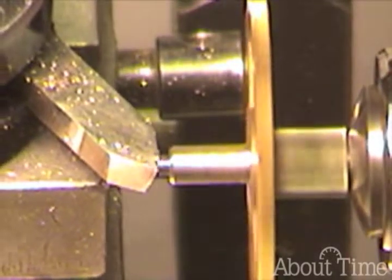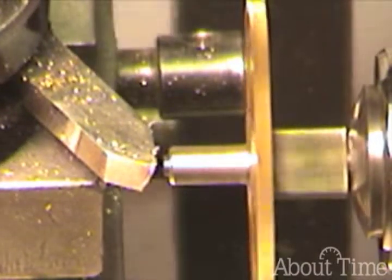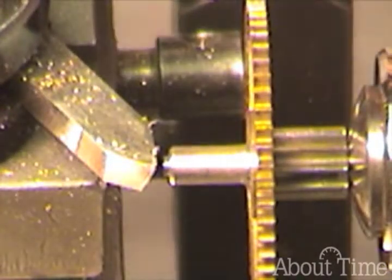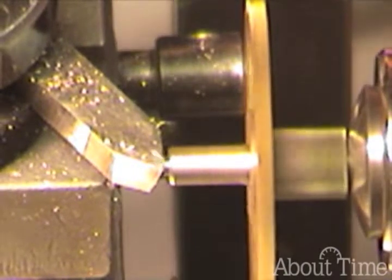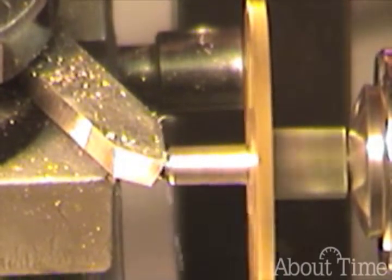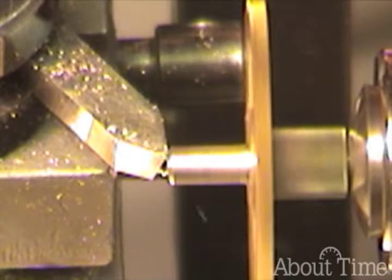You can see how soft that steel is. Now you want to be careful that you're not machining the shoulder. So you just take enough material off that you have a flat surface.